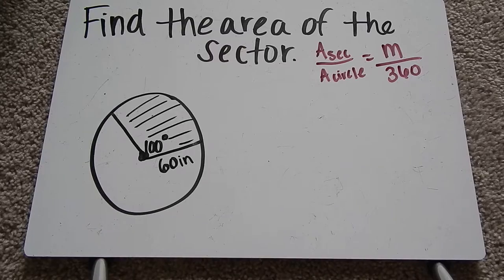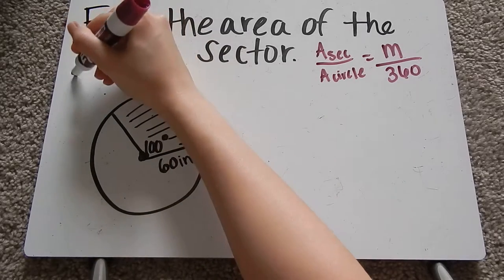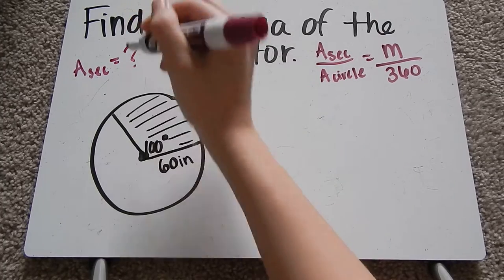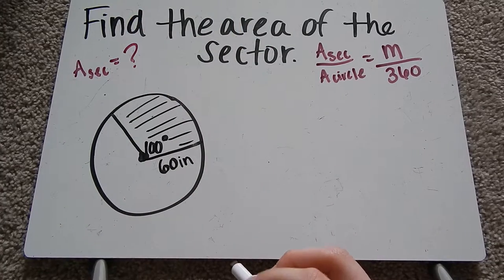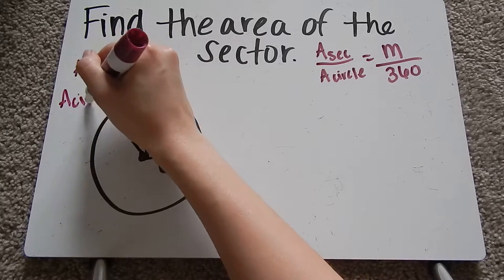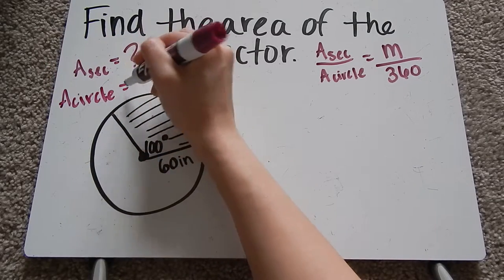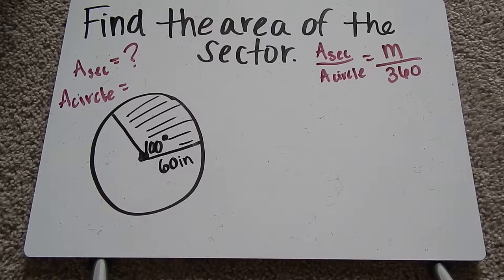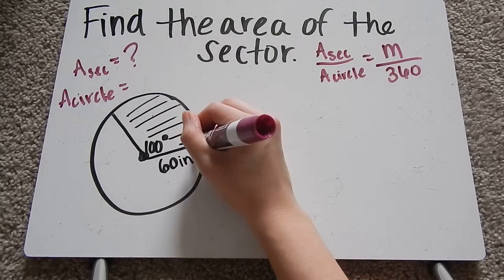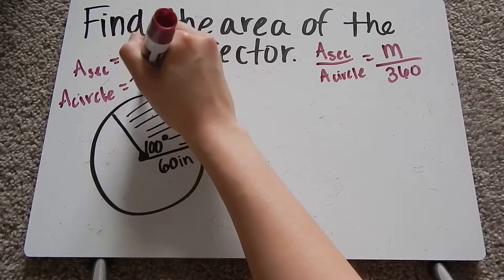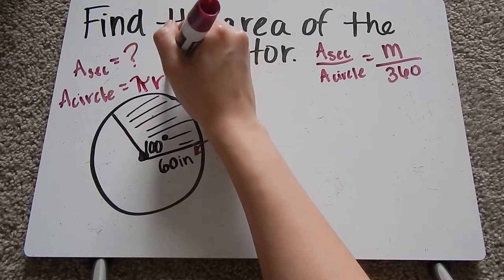So let me go ahead over here and write down what I know. So the area of the sector, well that's what it's asking me to find, so that's an unknown. Then we have area of the circle. I don't know the area of the circle, but I do know the radius, which is here. And we know the area of the circle is πr².